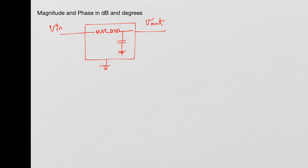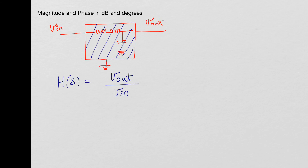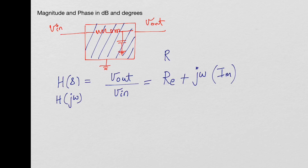Right now let's assume this is a black box. The transfer function H(s) is defined as V_out over V_in. When you have reactive elements like capacitors or inductors, this function will have a real value plus j·ω times an imaginary value — so H(s) or H(jω) equals the real part plus j·ω times the imaginary part.